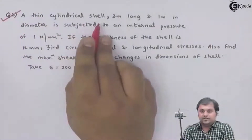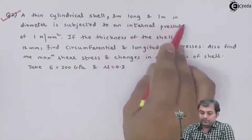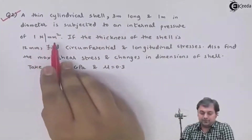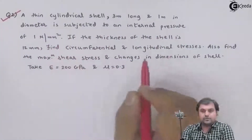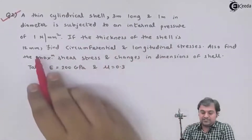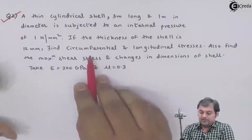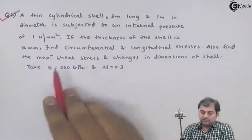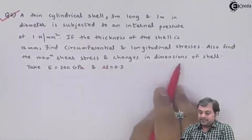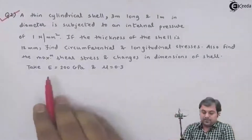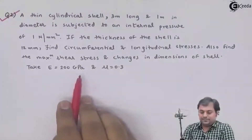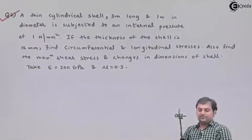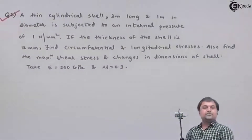A thin cylindrical shell 3 meters long and 1 meter in diameter is subjected to an internal pressure of 1 Newton per mm². If the thickness of the shell is 12 mm, find circumferential and longitudinal stresses, also find the maximum shear stress and changes in dimensions of the shell. Take E as 200 GPa and mu as 0.3.